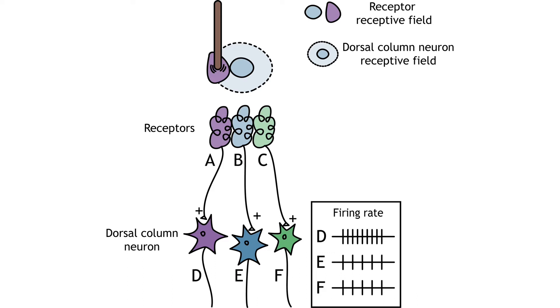The receptive field of a dorsal column nucleus has an inhibitory surround, which is a result of the indirect connections between mechanoreceptors and the dorsal column neuron via inhibitory interneurons. When a stimulus touches the surround of the receptive field of cell E, the firing rate decreases.